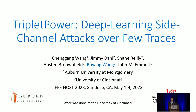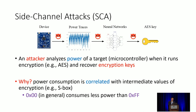A little bit of background on side channels. The assumption here is we have an attacker who can monitor the power consumption on the target, for example a microcontroller running encryption algorithms such as AES-128. By doing that, the attacker can recover encryption keys, because fundamentally there is a correlation between power consumption and the intermediate values of encryption algorithms, such as the output of AES S-box or sub-bytes.